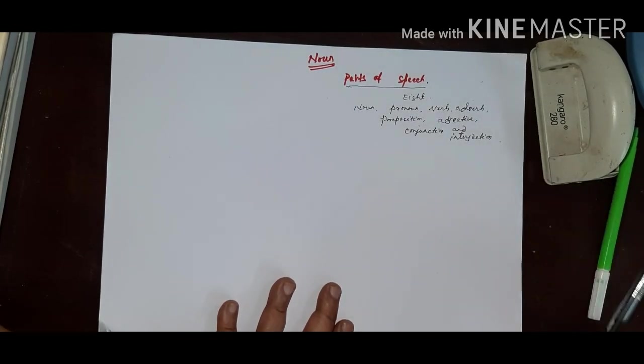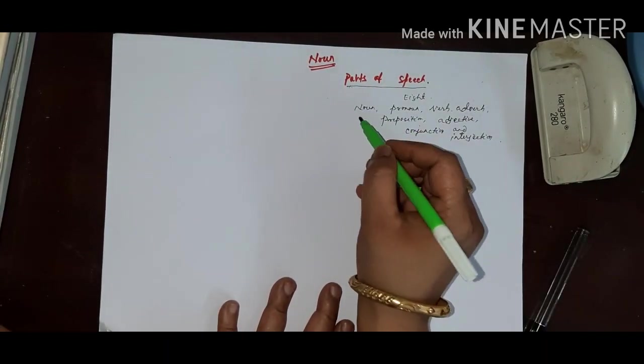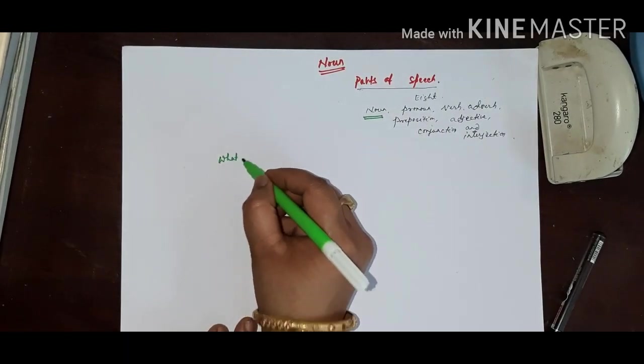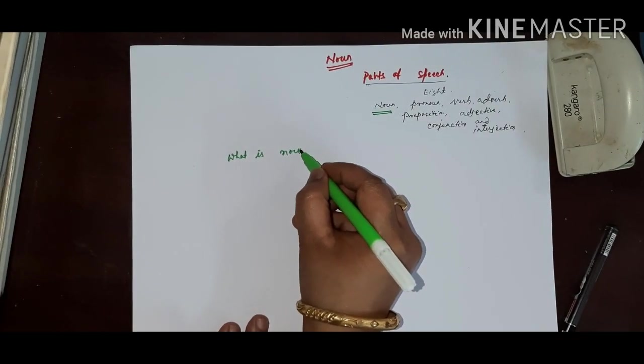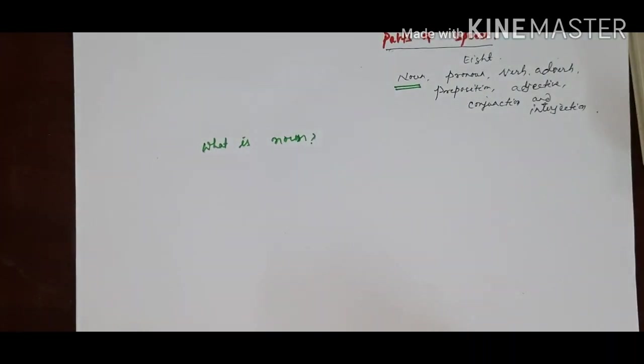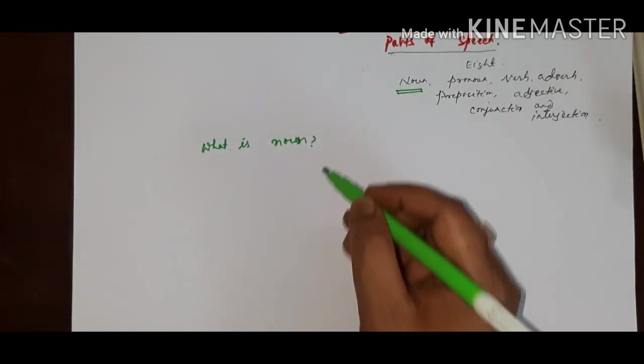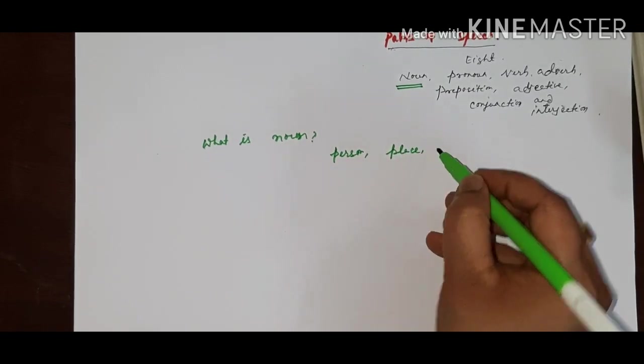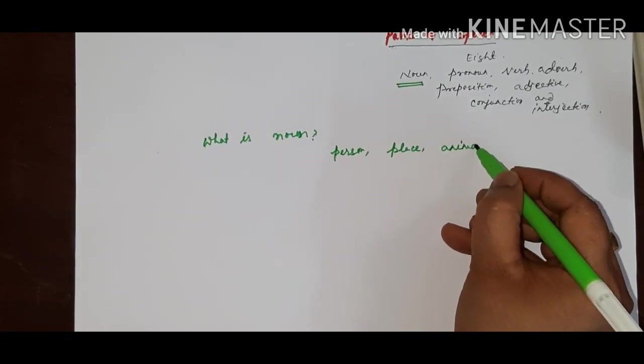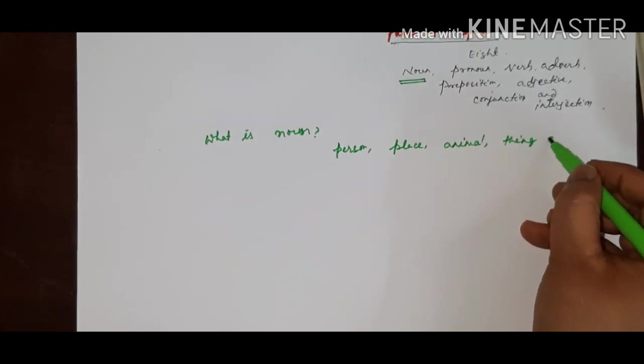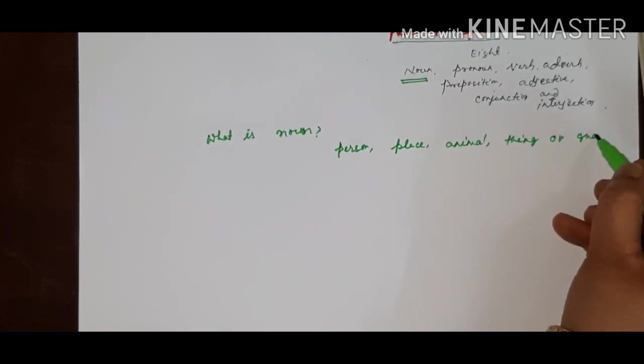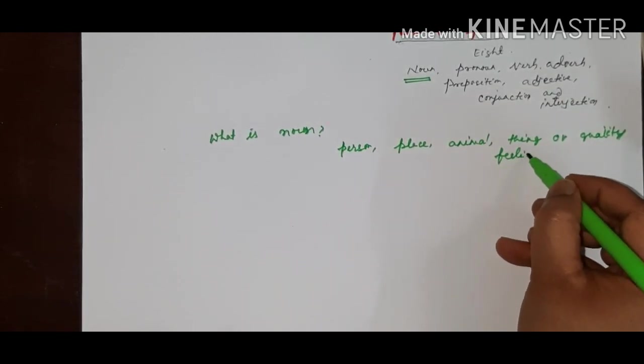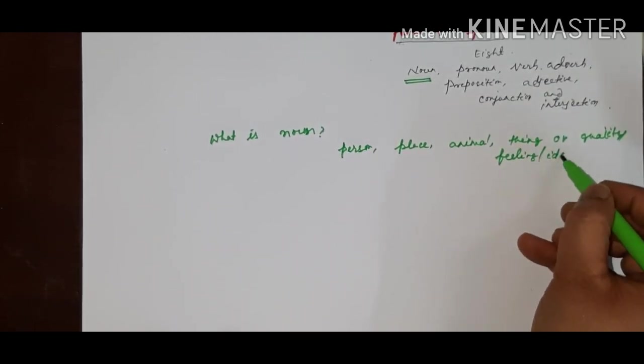Today we are going to discuss about noun. What is noun? A noun is a naming word which names a person, place, animal, thing, or quality, feeling, idea.